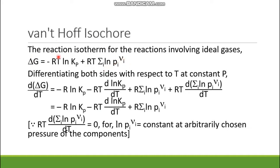The physical significances of all the terms are known to us. ΔG is free-energy change, R is universal gas constant, T is the temperature of the reaction, Kp is the equilibrium constant in terms of pressure. Here small p is partial pressure of the i-th component of gas and νᵢ is the stoichiometric coefficient of the i-th component of gas.